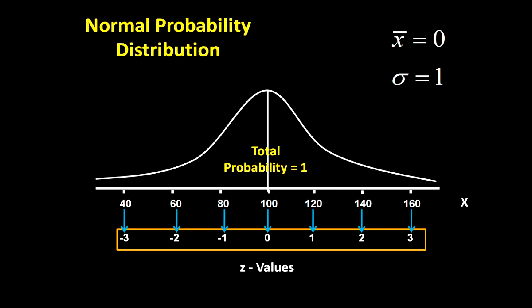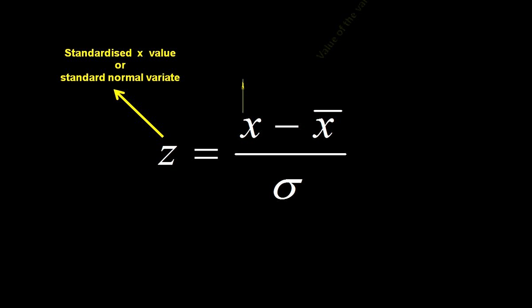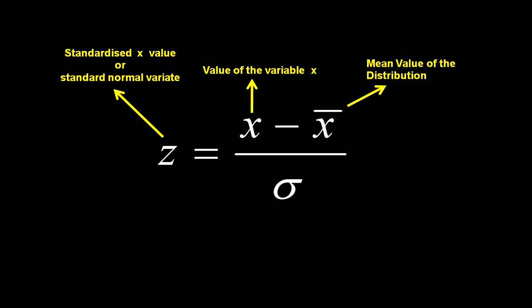To make a normal probability distribution, we have to standardize the values of X. Standardized X values are called Z values. The formula used to convert X values into Z values is: Z stands for standardized X values, X stands for the value of the variable, X-bar stands for the mean value of the distribution, and sigma stands for the standard deviation of the distribution.